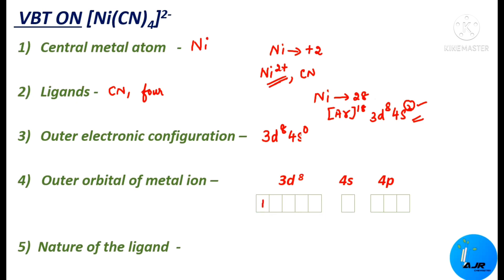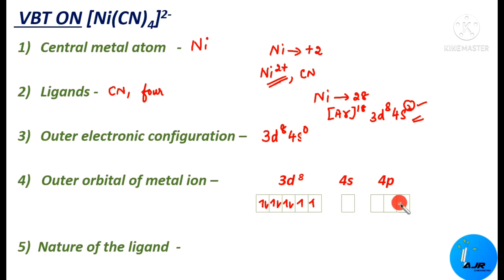Based on Hund's rule, we accommodate the 8 electrons in the 3d orbitals: filling positions 1, 2, 3, 4, 5 singly first, then pairing up at positions 6, 7, 8. So 3 of the 3d orbitals are paired and 2 are unpaired. The 4s is 0 (empty) and 4p is also left free.